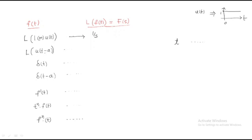The next formula is the Laplace transform of u(t - a), where the 'a' portion represents a time shift. Whenever time shifting is present, the result is multiplied by an exponential factor. The Laplace transform of u(t) is 1/s, but with time shifting by 'a', you multiply by e^(-as). So L{u(t-a)} = e^(-as)/s.